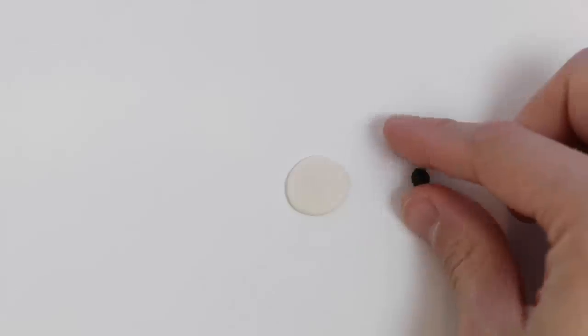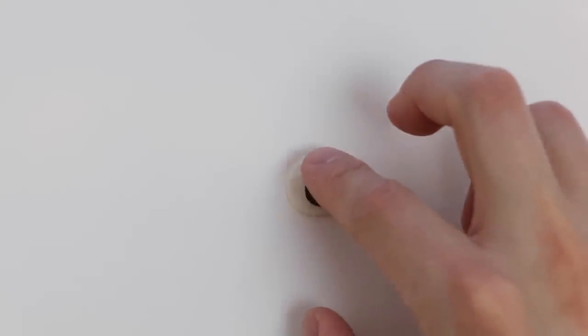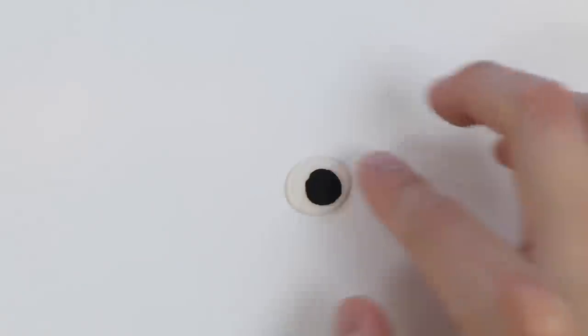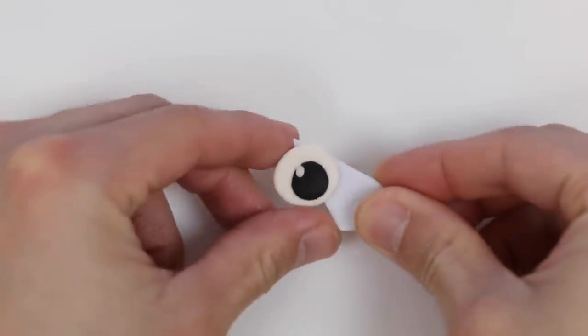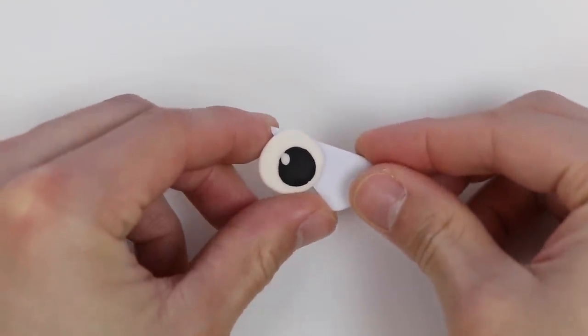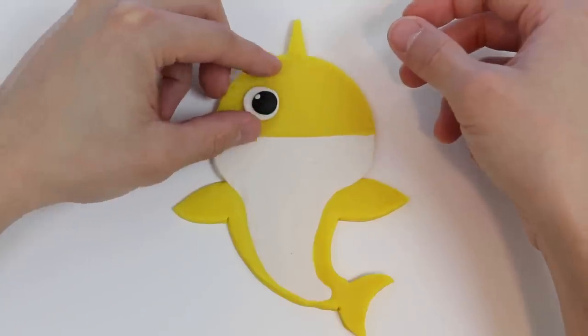Use a little bit of black to make the eyeballs. Add a little more detail. Perfect. Here's our baby shark's eye. I went ahead and made one more, so let's go ahead and attach both eyes.